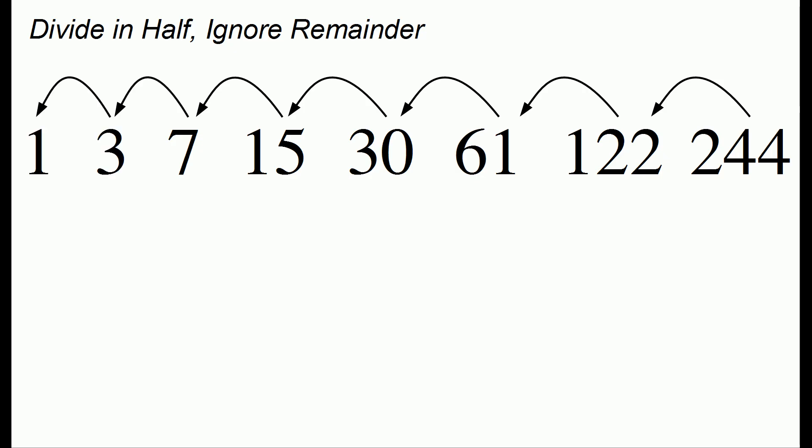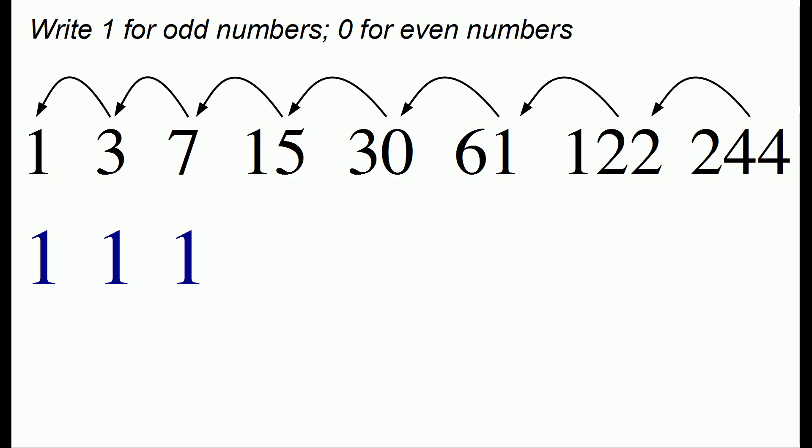3 and finally 1. Once again all we do now is write a 1 below any number that's odd and a 0 below any number that's even. So we have 1, 1, 1, 1, 1, we have an even number, and then we just fill out the rest.